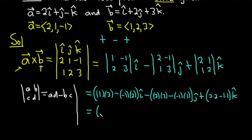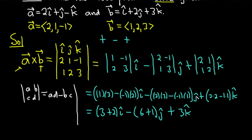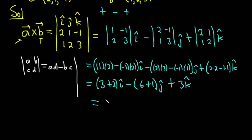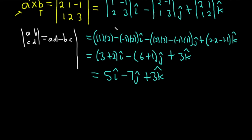This is going to be 3 plus 2, i-hat — that's 5i-hat — minus (6 plus 1) j-hat — that's minus 7j-hat — plus (4 minus 1) k-hat — that's plus 3k-hat. So A cross B equals 5i-hat minus 7j-hat plus 3k-hat. That is the final answer.